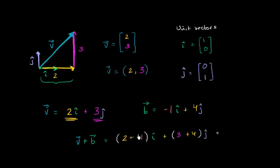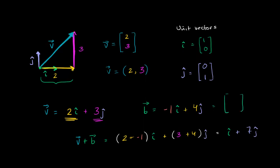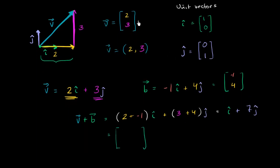That gives us: 2 plus negative 1 is 1î, which we can write just as î. Plus 3 plus 4 is 7ĵ. To see this is exactly how we saw vector addition in the past, we could also represent vector b as the column vector (−1, 4). If you were to add v to b by adding corresponding terms, that is 2 plus negative 1 equals 1, and 3 plus 4 equals 7 — giving the column vector (1, 7). This is the exact same representation: unit vector notation and column vector notation are equivalent.